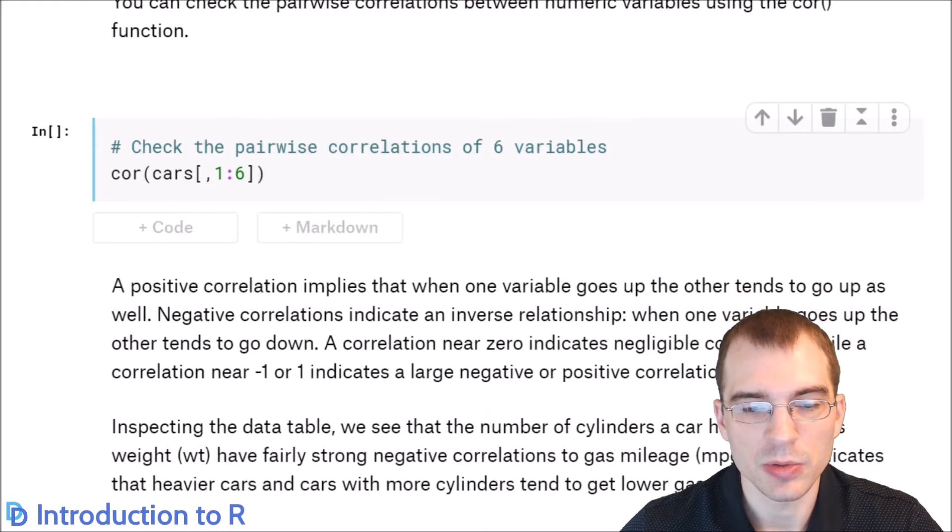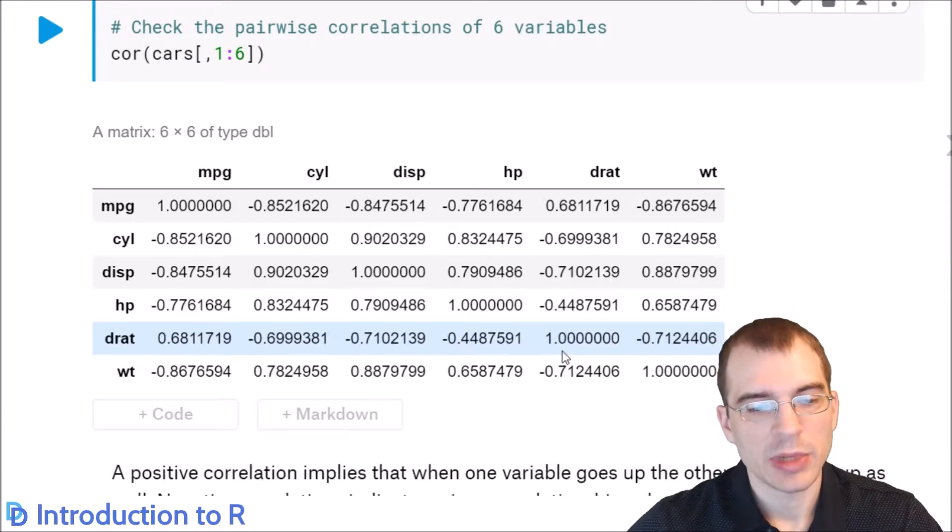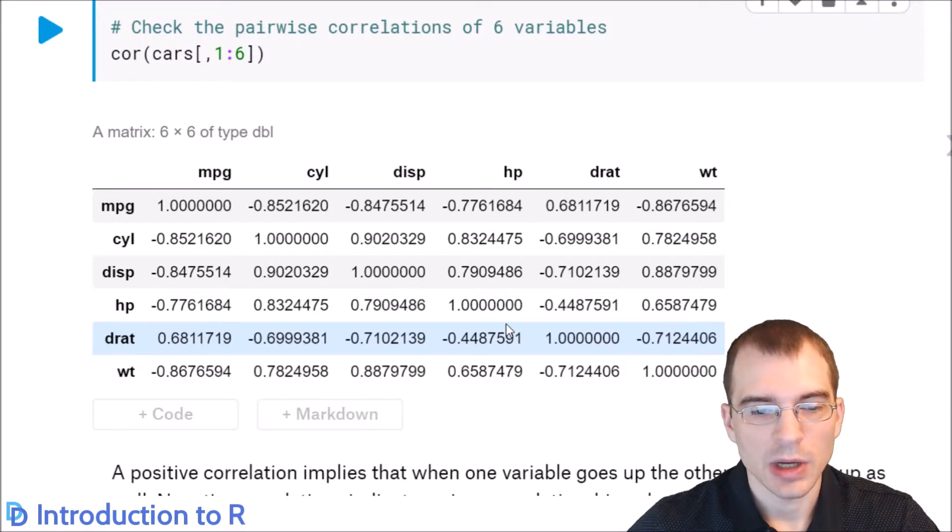To look at which variables might be highly correlated, you can use the correlation or cor function. Then you just pass in all of the columns that you're wanting to look at and this will create pairwise correlations for all of them. For this call, we're just going to look at the first six columns of the cars data set and see what their correlations are. From this correlation matrix here, we can see there are several columns that have very highly correlated values.